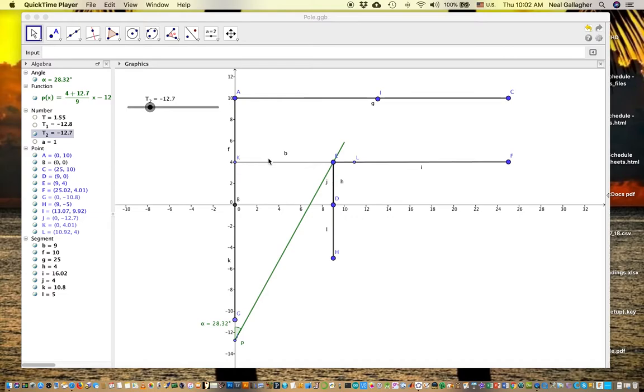In the hallway problem, you're trying to fit a pole around a 90 degree corner connecting two hallways. In this example, the vertical hallway has a width of 9 and the horizontal hallway has a width of 6.